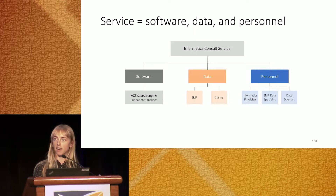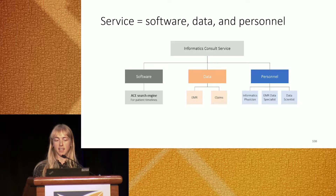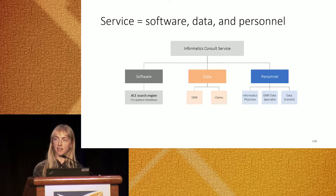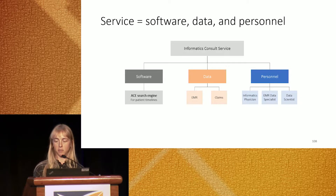We use data from three sources: EMR data from our health system for approximately 3 million patients, and claims data from two sources — the IBM Trueven MarketScan data and the Optum Clinformatics Data Mart, which have 150 million and 50 million lives respectively. The personnel are the third essential component, with three roles: an informatics physician, an EMR data specialist, and a data scientist.